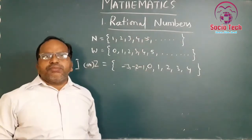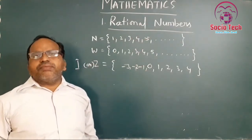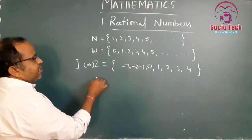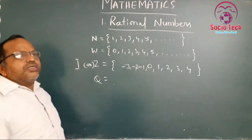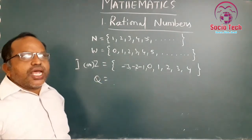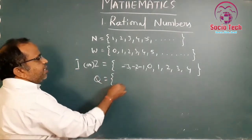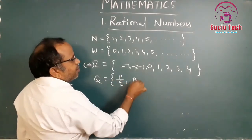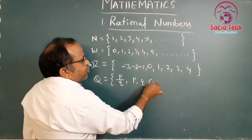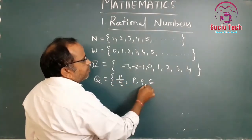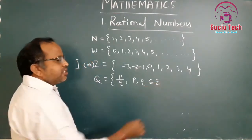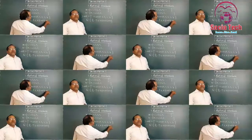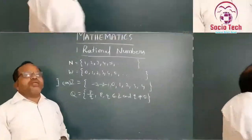Now we are going to discuss about rational numbers. Rational numbers are the numbers which are expressed in the form p by q, where p and q both belong to integers, and q is not equal to 0.